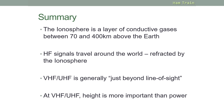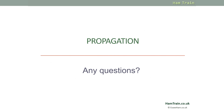That's it for this module on propagation. A quick summary: the ionosphere is a layer of conductive gases between 70 and 400 kilometres above the earth — remember those numbers, as they frequently come up in the foundation exam. HF signals travel around the world, refracted by the ionosphere. VHF and UHF are generally just beyond line of sight, although some atmospheric conditions can extend this. At VHF and UHF, height is more important than transmitted power.